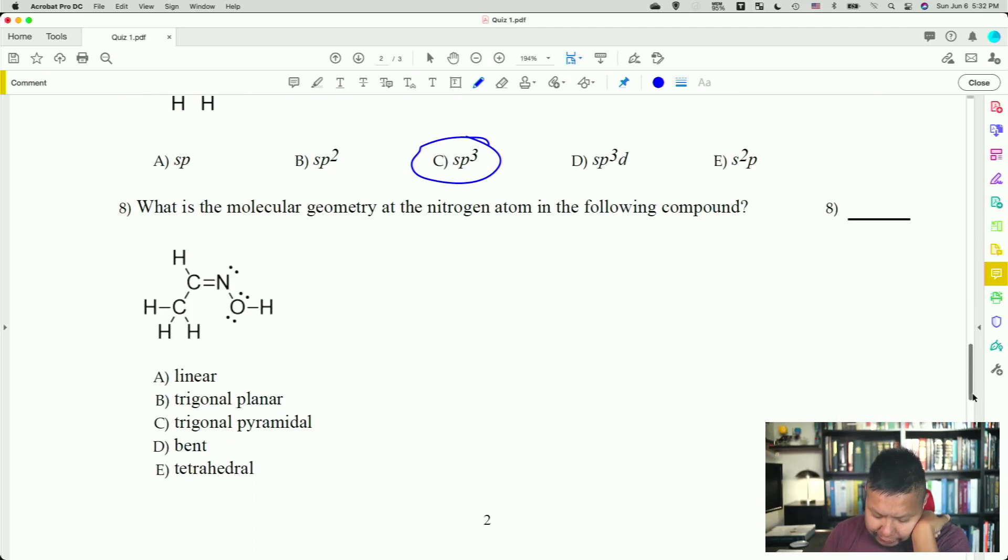What is the molecular geometry of the nitrogen atom in the following compound? So you have a bent nitrogen here because you have the lone pair at the top. And generally if it were sp3 hybridized, it would be trigonal planar. But since this nitrogen is actually double bonded on one side, it doesn't have a third side anymore to make it trigonal planar. So now it's only bent. So this sp2 nitrogen right here is bent. The answer is D.